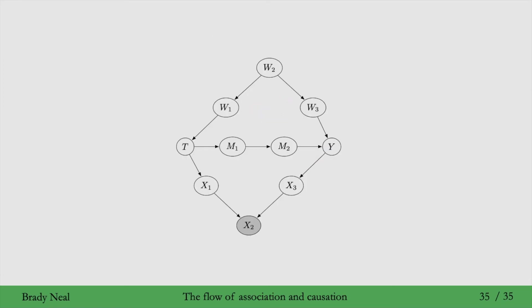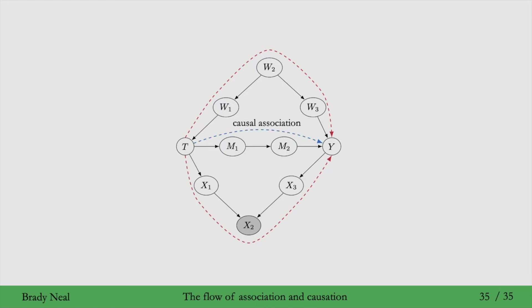So if we look at the big graph that we saw two slides ago and we condition on the collider x2 here, we can see that association flows along all of these paths. And only the middle path through the m's here is how causal association or causation flows. The rest of these other paths are non-causal association, and this flow of non-causal association from t to y is why association is not causation.